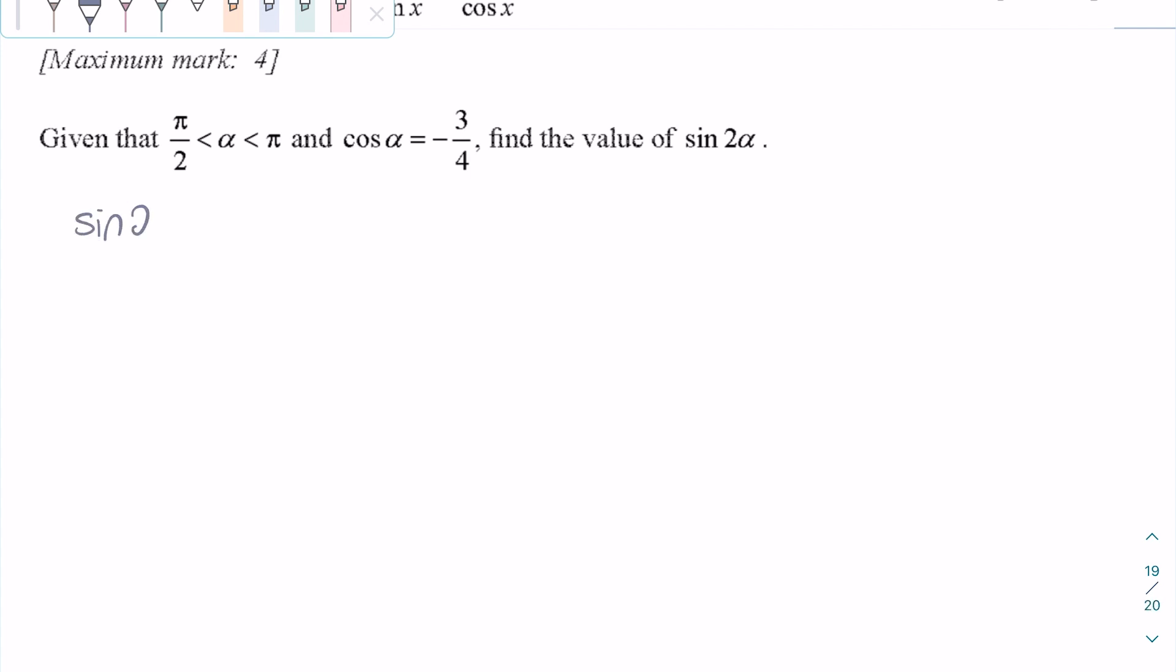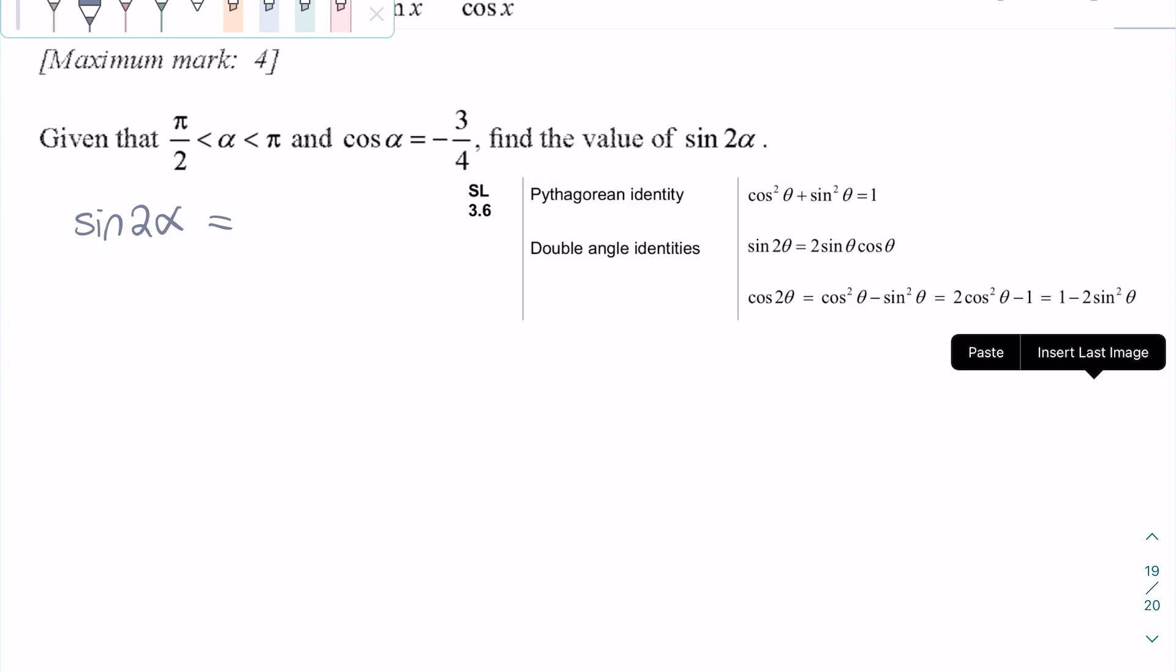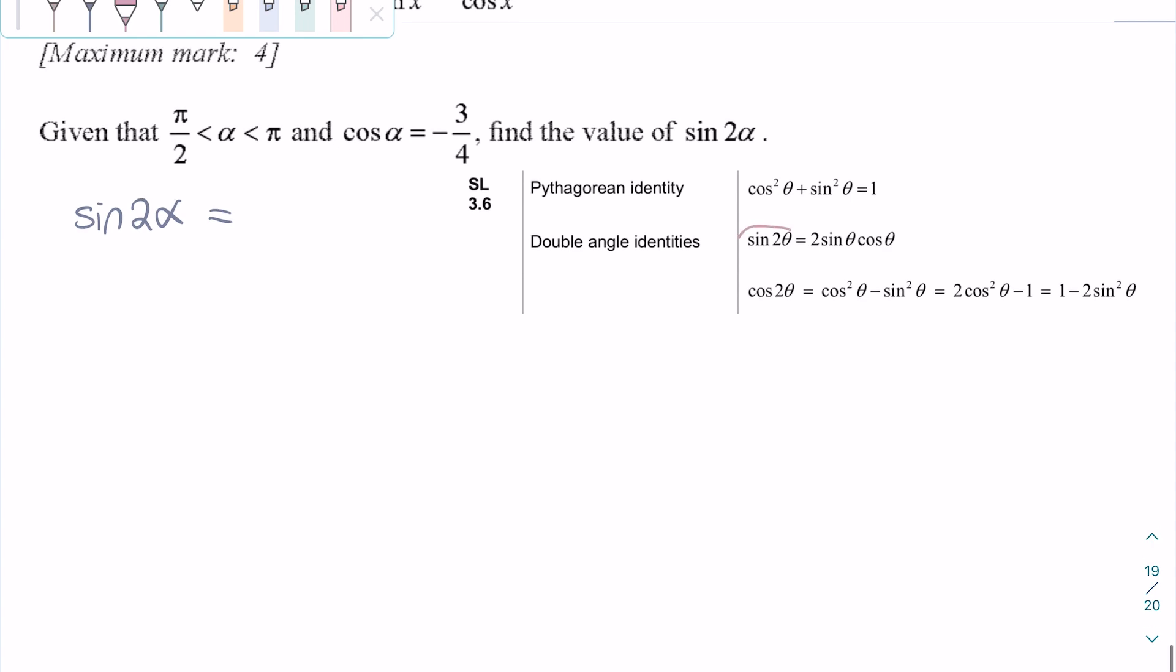Sine 2α is a double angle, so we need to rewrite this in terms of just alpha instead of 2 alpha. To do this, we can use a formula from the formula booklet, and we will use the sine double angle identity.